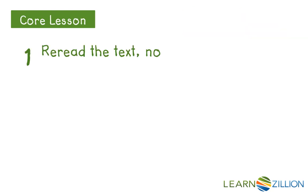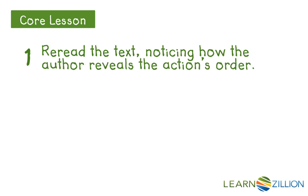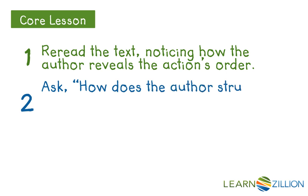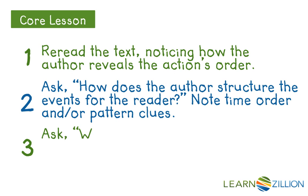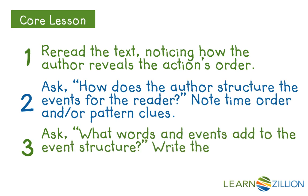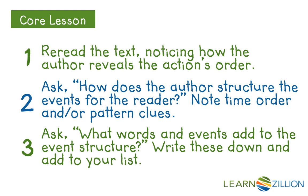We're going to have three steps to our lesson. The first is to reread the text, noticing how the author reveals the action's order. Second, we're going to ask ourselves how the author structures the events for the reader, and note any time order or pattern clues within the text. Our third step will be to ask what words and events add to the event structure, and we're going to write those down and add them to our list, because we'll need them when we go to make our writing prompt response.